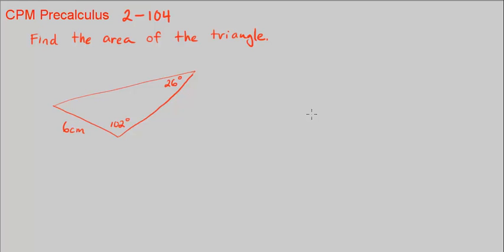This is CPM Pre-Calculus Chapter 2, Number 104. So find the area of the triangle to the right.